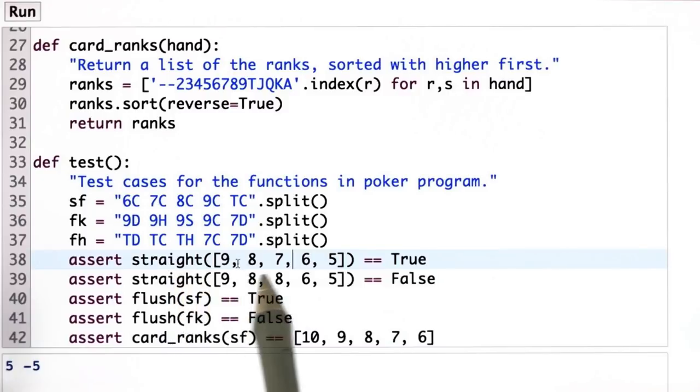So, remember, straight takes as input a list of ranks, not a hand or a list of cards. And so, 9, 8, 7, 6, 5, yes, that is a straight. 9, 8, 8, 6, 5, that's got a pair. It's not a straight. And so that should be false.